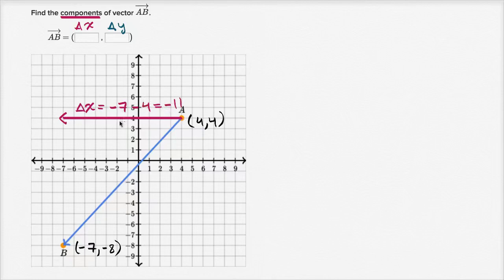The negative tells us that we decreased in x by 11. And you can see that if you just visually count the squares. You could say, look, if I'm going from four to negative seven, I have to go down four just to get back to x equals zero. And then I have to go down another seven. So I have to go to the left 11 spaces. So that's negative 11. So that's my x component, negative 11.